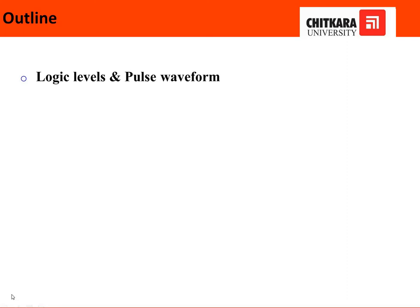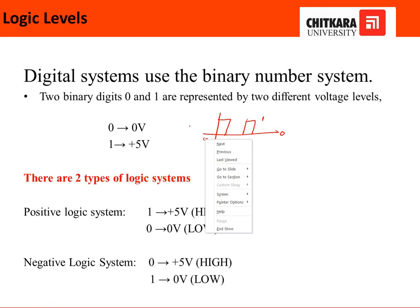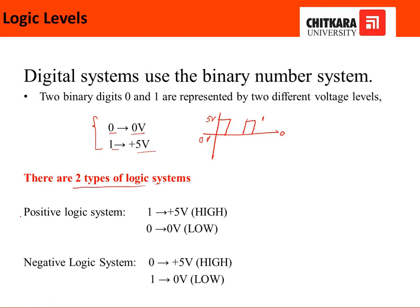In today's video we will discuss logic levels and pulse waveforms. Logic levels are of two types, as discussed in previous videos. Our digital system consists of a finite range of values: it is represented by one and zero. If we see the amplitude level, zero is represented by zero volts and one is represented by five volts.